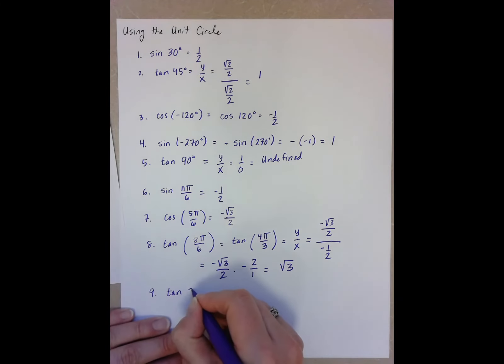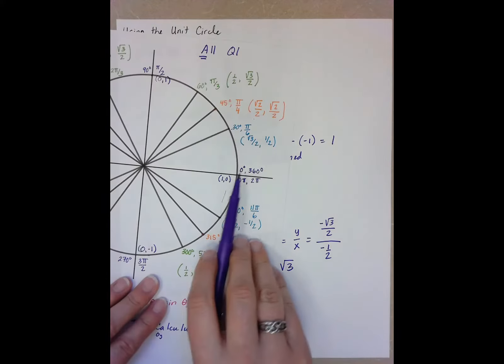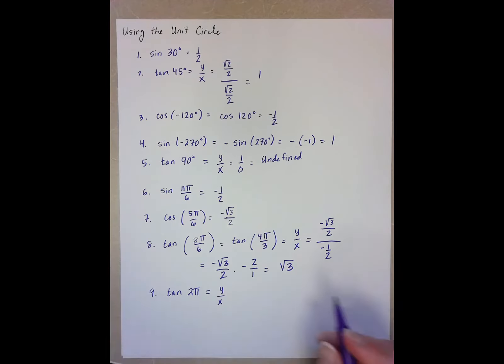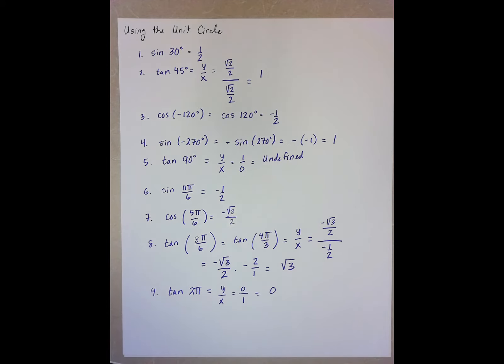Tan of 2 pi. Remember, tan is the same as y over x. 2 pi is at 0 degrees, 360 degrees, 0 pi. And our x and y are 1 and 0, so our y is 0 and our x is 1. So in this case, tan is 0.